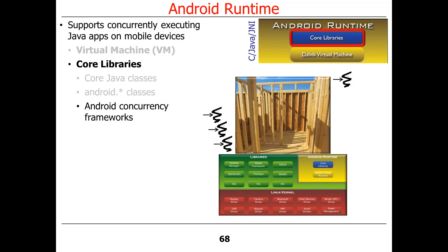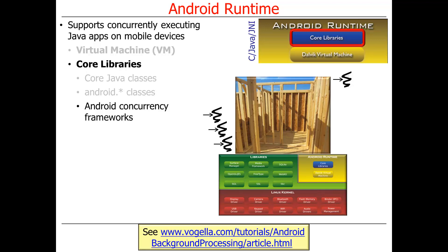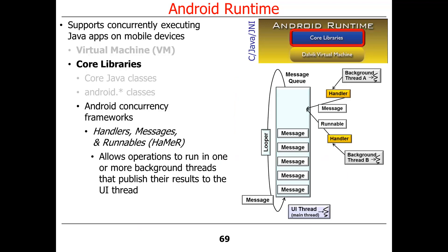One of the most interesting sets of things we're going to focus on in this course are the Android concurrency frameworks — frameworks focused on the types of design constraints that Android imposes upon developers. There are two particular frameworks we'll focus on in this class, and in fact your next programming assignment will use at least one of them. The first is the Handlers, Messages, and Runnables framework, or the HAMR framework.